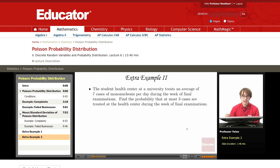Example number two. The student health center at a university treats an average of seven cases of mononucleosis per day during the week of final examinations. Find the probability that at most three cases are treated at the health center during the week of final examinations.